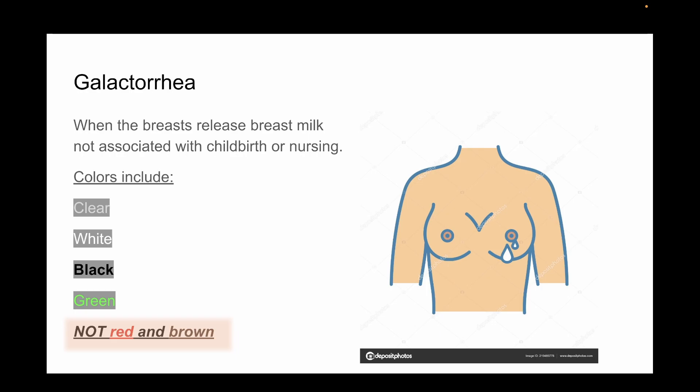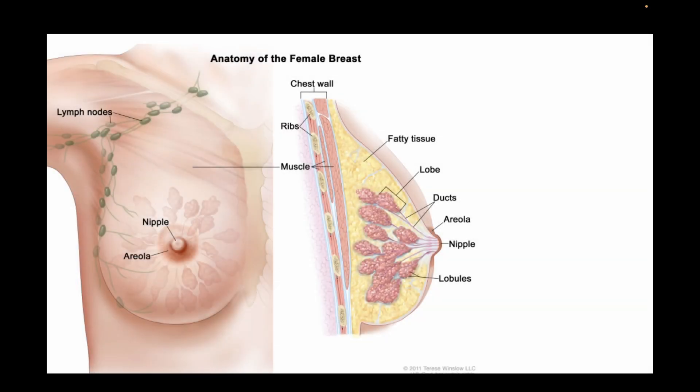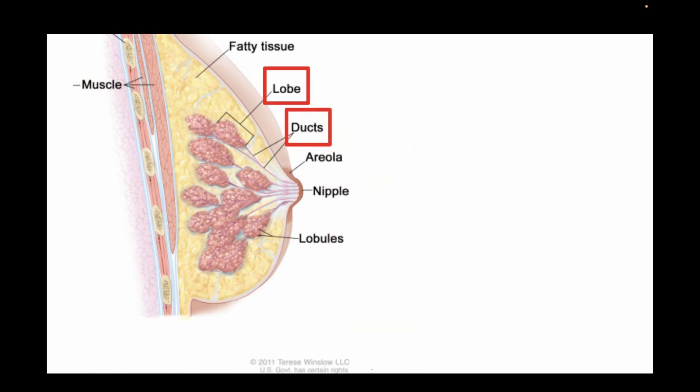With that clarified, let's take a moment to understand how the body produces milk in the first place. This is the anatomy of the human breast. Within the breasts are structures called lobes and ducts. Milk is created in the lobes and travels through the ducts to the nipple. A chemical in the body, specifically a hormone called prolactin, tells the lobules to produce milk.